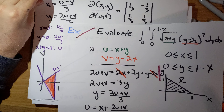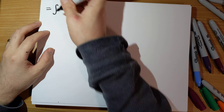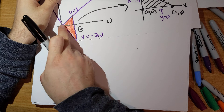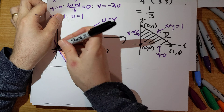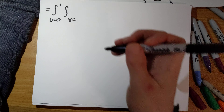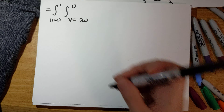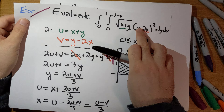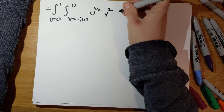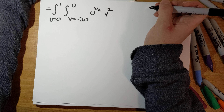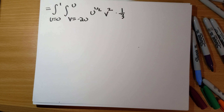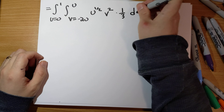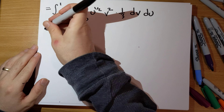Usually the substitution switches a nasty region for a nice one, but here the original region was nice and the new one is slightly less nice. The payoff is that our integrand is going to be much, much, much nicer. Our double integral equals: u runs from 0 to 1, v runs from −2u to u, and the integrand is √u · v² · (1/3) dv du. The Jacobian of 1/3 is always positive, so we include it directly.